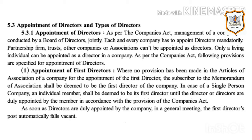Number 1: Appointment of First Directors. Where no provision has been made in the articles of association for the appointment of the first director, the subscriber to the memorandum of association shall be deemed to be the first director. In case of a single person company, an individual member shall be deemed to be its first director until directors are duly appointed. As soon as directors are duly appointed in a general meeting, the first director's post automatically falls vacant.